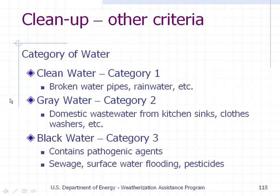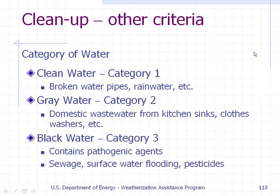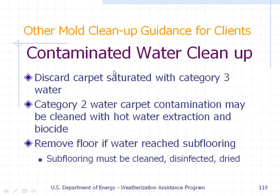Other criteria for cleanup — categories of water: Category 1 is clean water, such as broken water pipes or rainwater. Category 2 is gray water, such as domestic wastewater from kitchen sinks or clothes washers. Category 3 is black water containing pathogenic agents, such as sewage, service water flooding, and pesticides. For contaminated water cleanup: discard carpet saturated with Category 3 water. For Category 2 water, carpet contamination may be cleaned with hot water extraction and biocide, but remove the floor if water reaches subflooring; subflooring must be cleaned, disinfected, and dried.